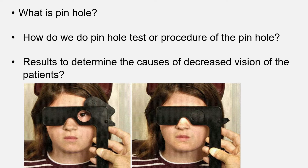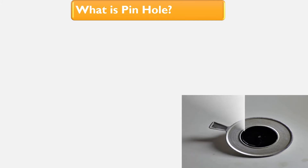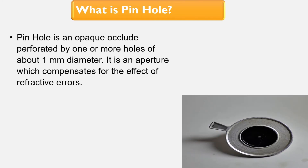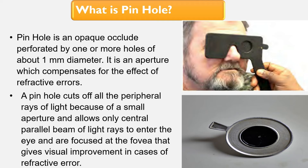Let's know what is pinhole. Pinhole is an opaque occluder perforated by one or more holes of about 1 mm diameter. It is an aperture which compensates for the effects of refractive errors. A pinhole cuts off all the peripheral rays of light because of a small aperture, and this allows only a central parallel beam of light rays to enter the eye and be focused at the fovea, giving visual improvement in cases of refractive error.